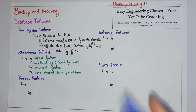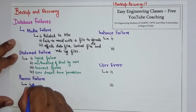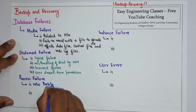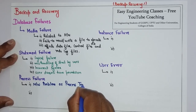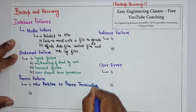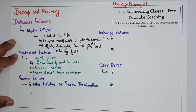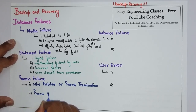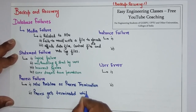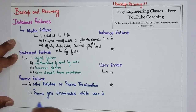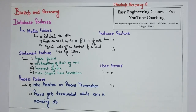Then we have process failure. Process failure is due to a network problem, or the process gets terminated prematurely. We can say that the process gets terminated while the user is accessing the database. If the user is accessing the database and the process gets terminated, then that comes under process failure.